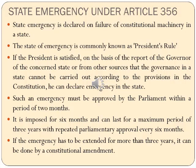Such an emergency should be approved by the Parliament within a period of two months. It is imposed for six months and can last for a maximum of three years with repeated Parliamentary approval once every six months. If the emergency is to be extended beyond three years, it can be done by constitutional amendment, as has happened in Punjab and Jammu and Kashmir. During an emergency, the President can take over the entire work of the Executive, and the Governor administers the state in the name of the President.